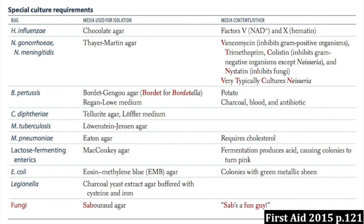Haemophilus literally means blood-loving, so it's going to be plated on chocolate agar — it's chocolate because it's literally boiled blood. Gonorrhea is one of those organisms that's kind of difficult to grow, so it requires a special medium called Thayer-Martin medium. The way I try to remember that is that Martin sounds like a martini, and if you have too many martinis, you can get gonorrhea.